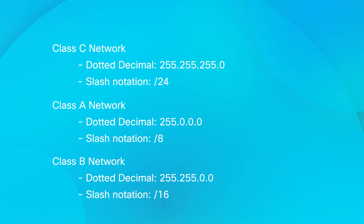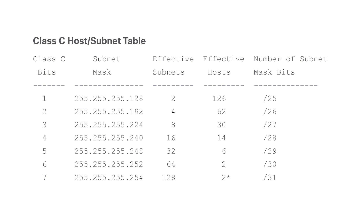You can create subnets for Class A through Class C networks. For Class C, this is a table of the subnet options. Notice how the subnet mask changes in dotted decimal and slash notations as more subnets are added. As you add subnetworks, the number of hosts available for each network goes down. On a side note, a slash 31 is only used in point-to-point links.